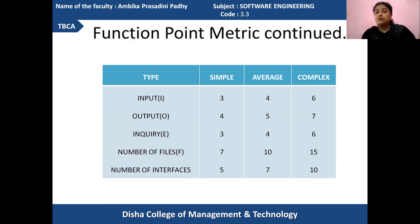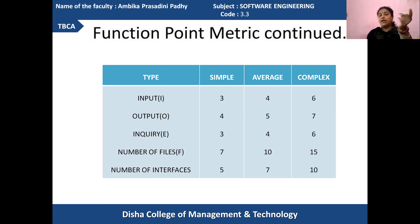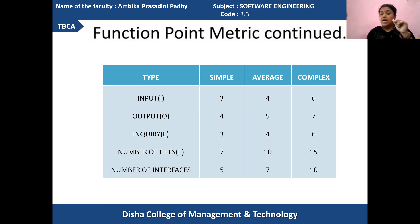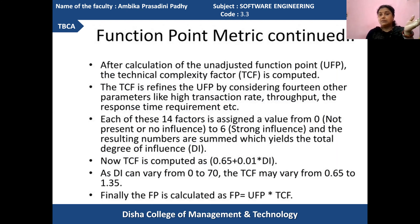If the inputs given are complex, outputs received are complex, and inquiry information processed are complex, then also the result will be accordingly different. So here we are refining the unadjusted function point by looking at these factors. After the unadjusted function point value is defined, using simple or average complexity factors, the function point will be calculated by identifying the technical complexity factor (TCF) or total complexity factor, basing upon more than 14 parameters.